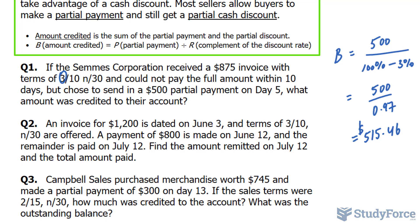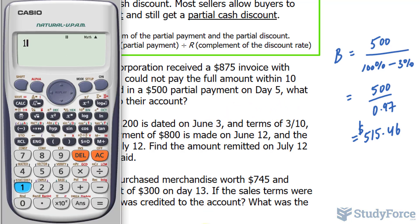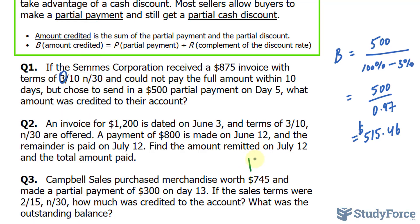Before solving, let's note what the discount would be if they had paid the full amount right away. $1,200 times 0.03 gives a discount of $36, meaning they would only have to pay $1,164. Instead, they couldn't make the full payment, but they did pay within the discount window.